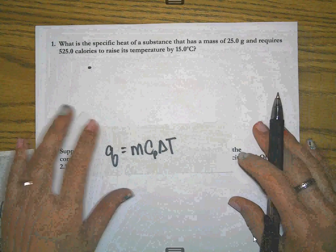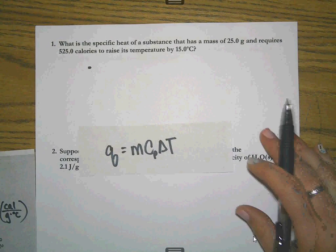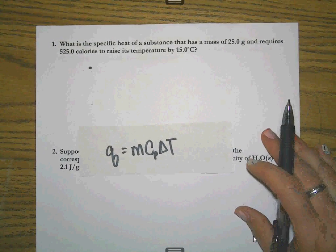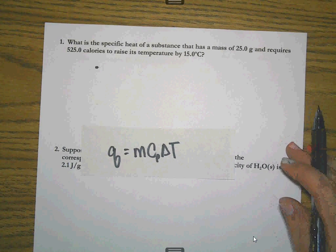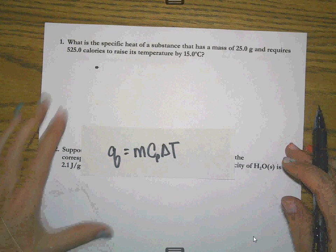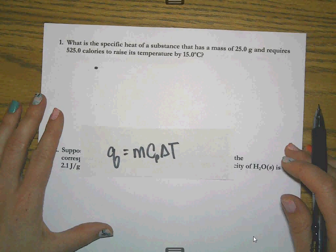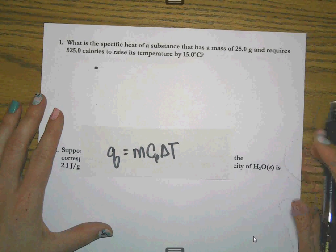Like I said, we're going to work off of this formula right here. There's going to be nothing fancy or tricky about these. Each one's a little bit different than the one before. So the first problem says, what is the specific heat of a substance that has a mass of 25 grams and requires 525 calories to raise its temperature by 15 degrees Celsius?